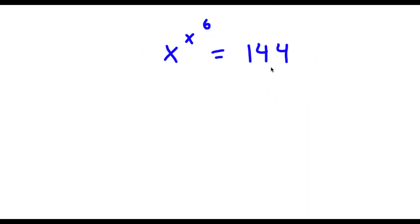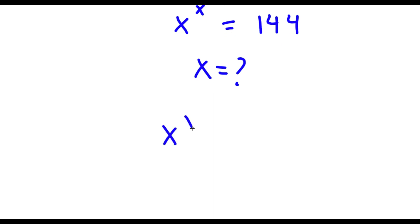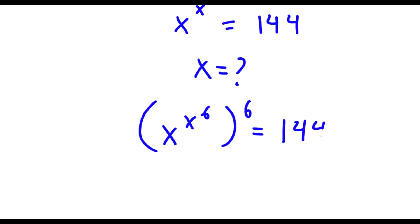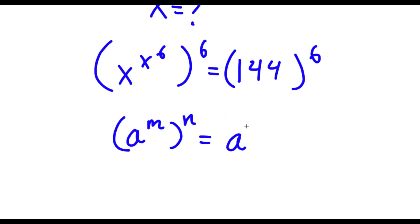Alright, so I have x to the power of x to the power of 6 is equal to 144. So I want to find the value of x. To start, I'm going to take the power of 6 on both sides. Now if I have something in the form a to the power of m to the power of n, this is the same thing as a to the power of m times n.